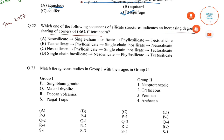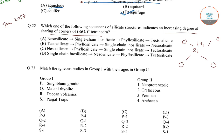In SiO4, in order to neutralize the plus 4 charge of Si, one negative charge from each of the oxygen ions reaches out to Si. So from the four sides, one negative charge from each oxygen ion reaches the Si cation. Thus each oxygen is left with a net charge of minus 1, resulting in SiO4 having a net charge of minus 4, and therefore this group can be bonded with other cations.